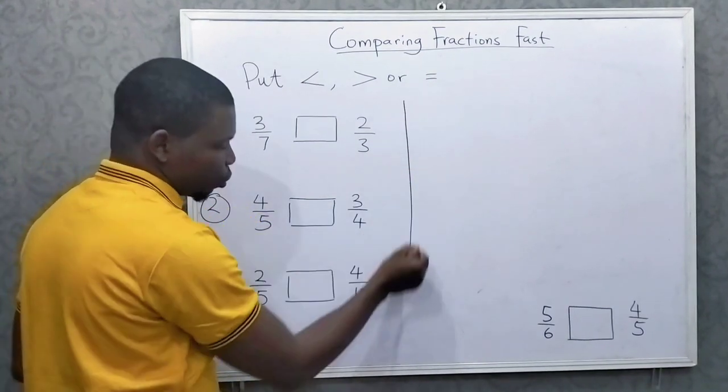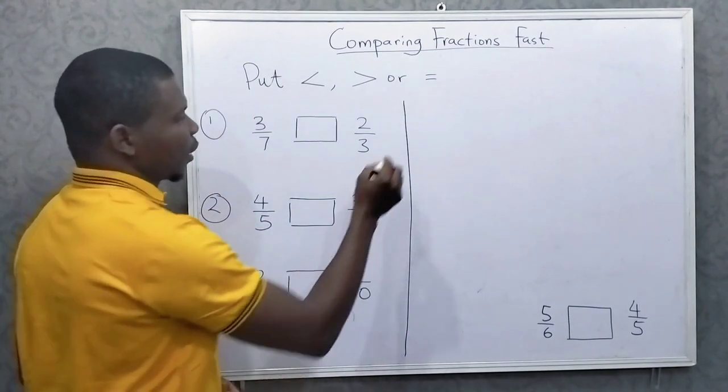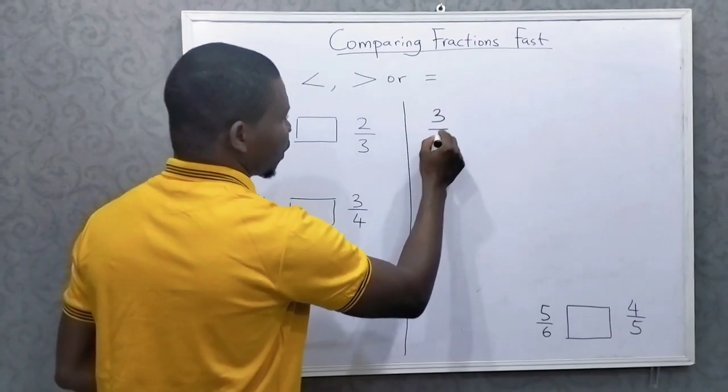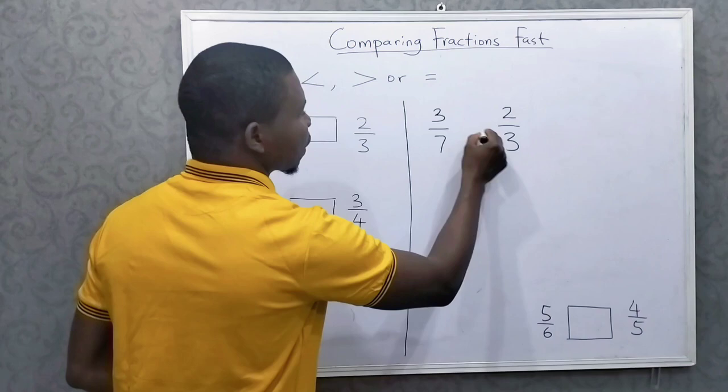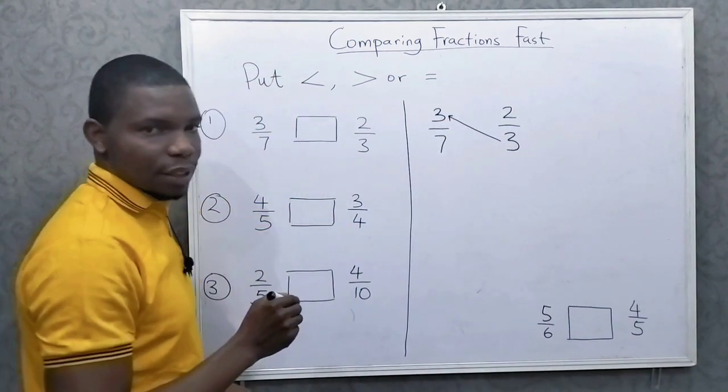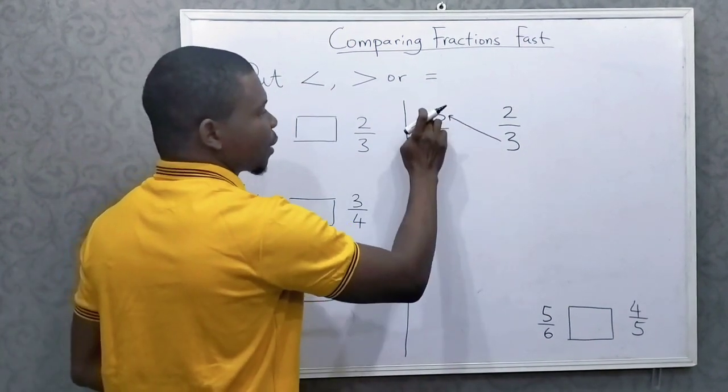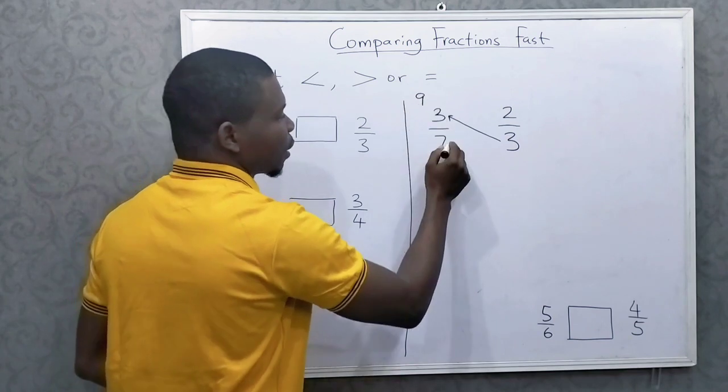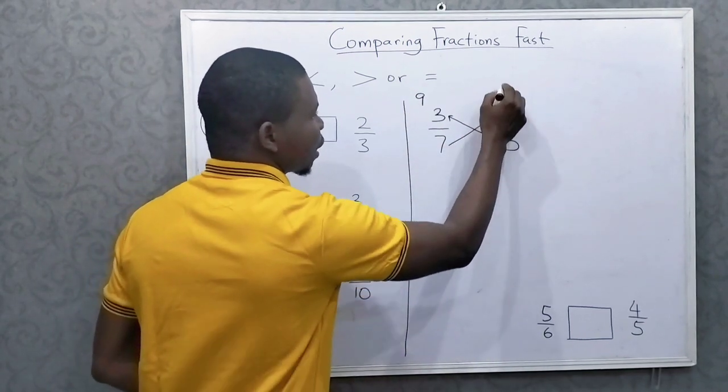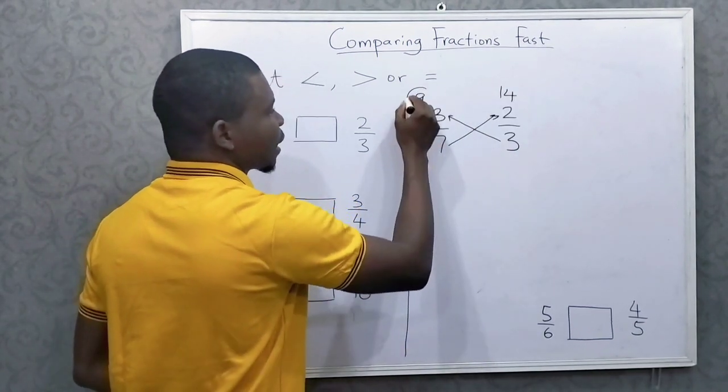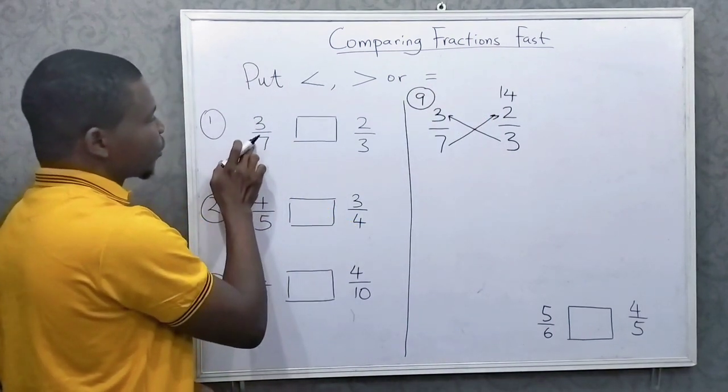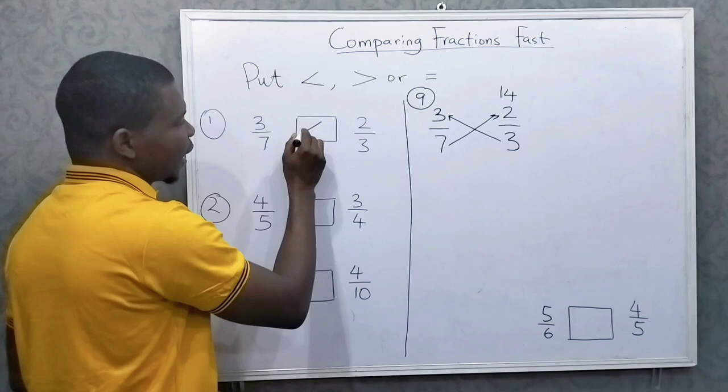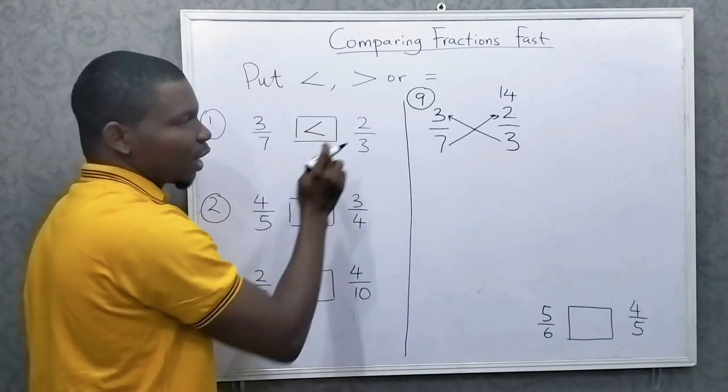Now when you have two fractions to compare, this is what you do very fast. First, you simply multiply diagonally like this. So 3 times 3 is 9, 7 times 2 is 14. Now because 9 is less than 14, we know that 3 over 7 is less than 2 over 3.